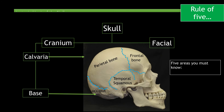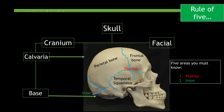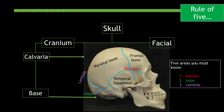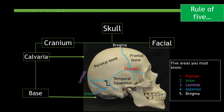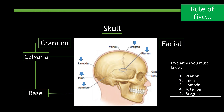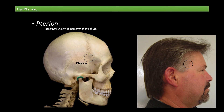There are five areas pertaining to the calvaria you must know: Tyrion, Inion, Lambda, Asterion, and Bregma. Here is a clear illustration of those five areas — pause the video if you'd like and have a closer look.